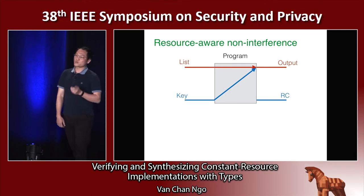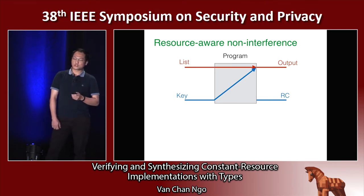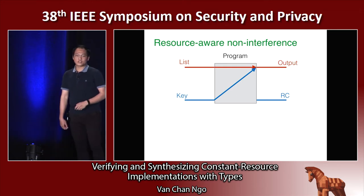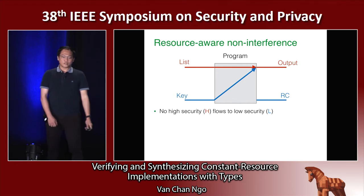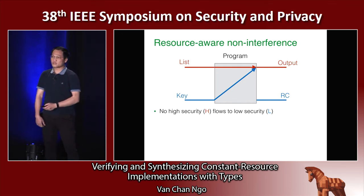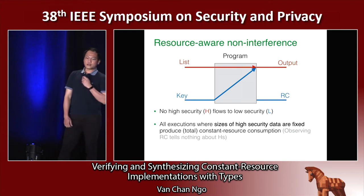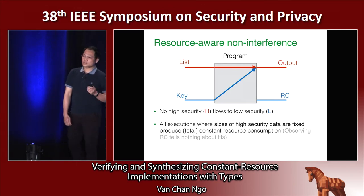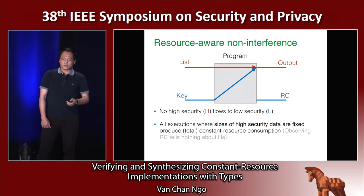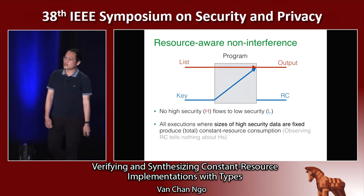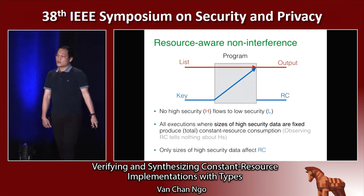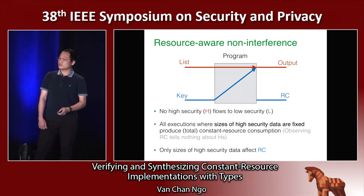To reason about this kind of attack, we propose a new notion: resource-aware non-interference. What is the meaning of resource-aware non-interference? First, it says that no high security flows to the low security — that means it ensures the classic non-interference property. Moreover, if the high security data and the size of the high security data are fixed, then it requires all executions of the program to produce constant resource consumption. So if the attacker observes the resource consumption of the program, observing the resource consumption tells nothing about the high security. As a result, only the size of the high security data affects the resource consumption.